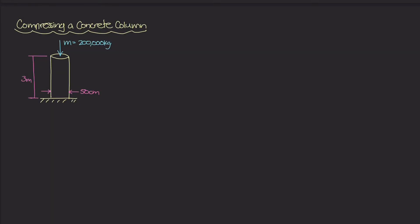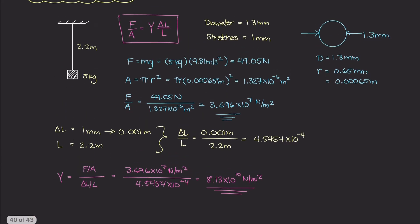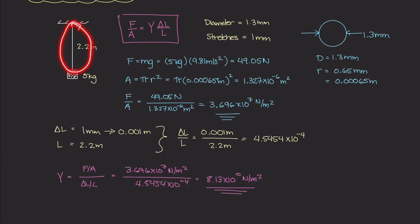Okay, welcome to our second example on elasticity. In the last example, we figured out what the Young's modulus of this wire was as it was suspended from a ceiling and holding onto this little mass block. And we used this relationship between the stress and the strain as well as Young's modulus to figure out what the Young's modulus was for this wire.